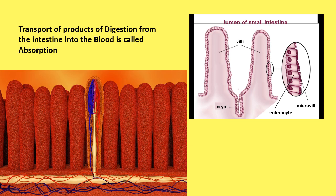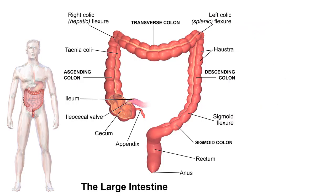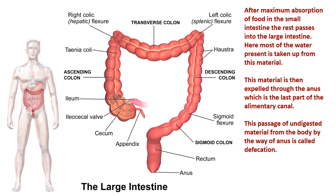Glucose breaks down to form carbon dioxide and releases the energy required for various life processes. The undigested and unabsorbed food passes from the small intestine to the large intestine. After maximum absorption of food in the small intestine, the rest passes into the large intestine, where most of the water present is absorbed from this material. This material is then expelled through the anus, which is the last part of the alimentary canal. This passage of undigested material from the body by way of the anus is called defecation.